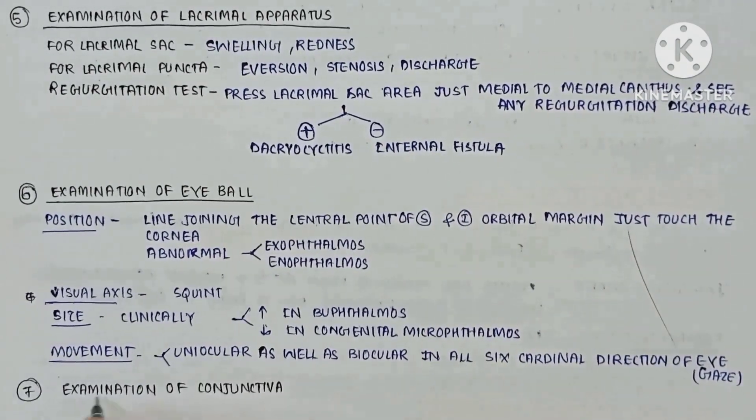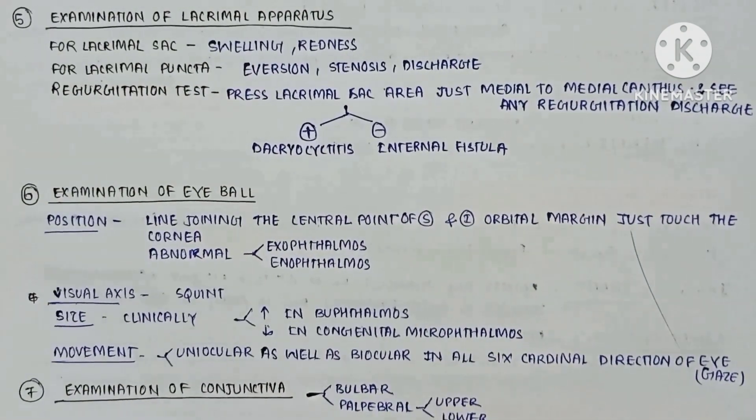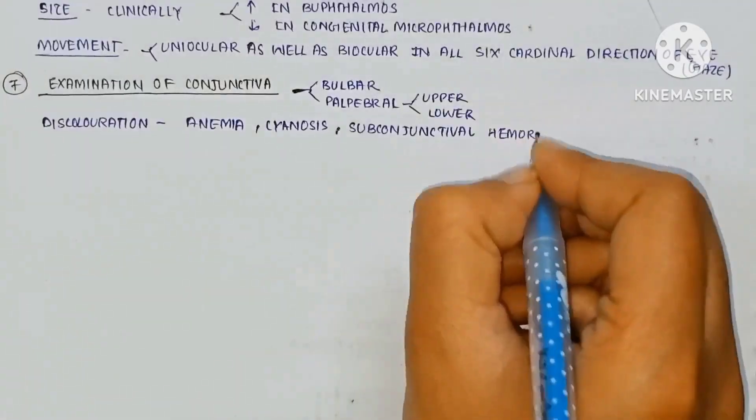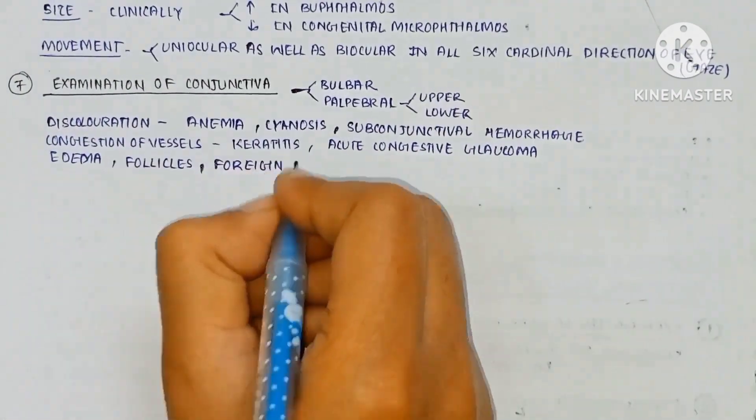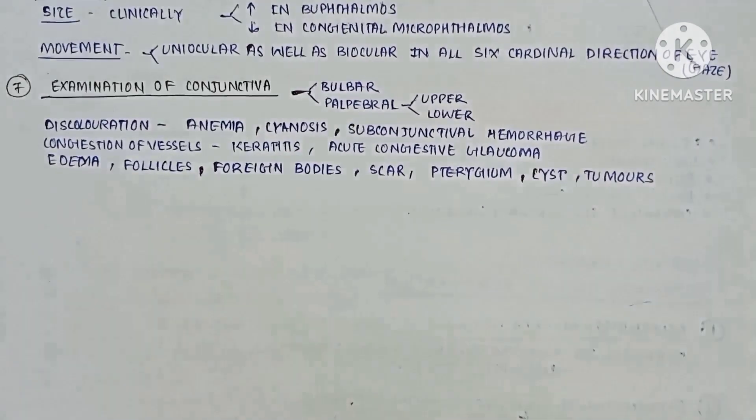The examination of the conjunctiva, both bulbar and palpebral conjunctiva. The discoloration in anemia, jaundice, subconjunctival hemorrhage. The congestion of vessels in keratitis, acute congestive glaucoma. The edema, follicles and foreign body, scar, pterygium, cyst, tumor.